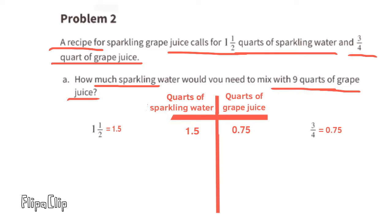Let's put nine quarts of grape juice in the grape juice column. Let's find out how many times 75 hundredths goes into nine. Nine is 12 times larger than 75 hundredths, meaning we multiplied 0.75 times 12 to get nine. Now we have to do the same thing to the column on the left: 1.5 times 12.